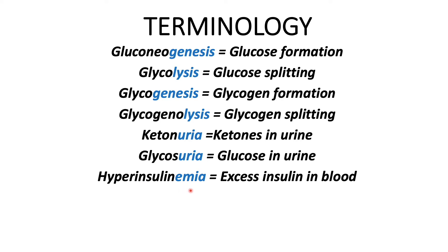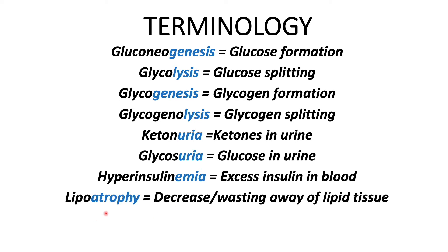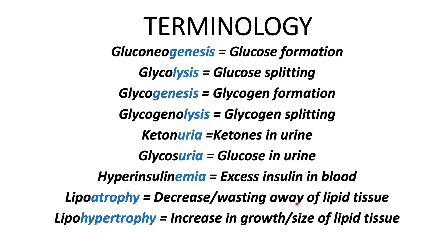Next is lipo atrophy: 'lipo' refers to fat or lipid tissue, and 'atrophy' refers to decrease or wasting away of lipid tissue. Next is lipo hypertrophy: 'lipo' refers to lipid or fat tissue, and 'hypertrophy' refers to increase in growth or size of lipid tissue. With lipo atrophy and lipo hypertrophy, these are important in reference to people who inject insulin in the same position repeatedly — this can lead to lumps or thickened, hardened tissue in that area, which can affect insulin absorption. For this reason, it's important that injection sites are rotated.